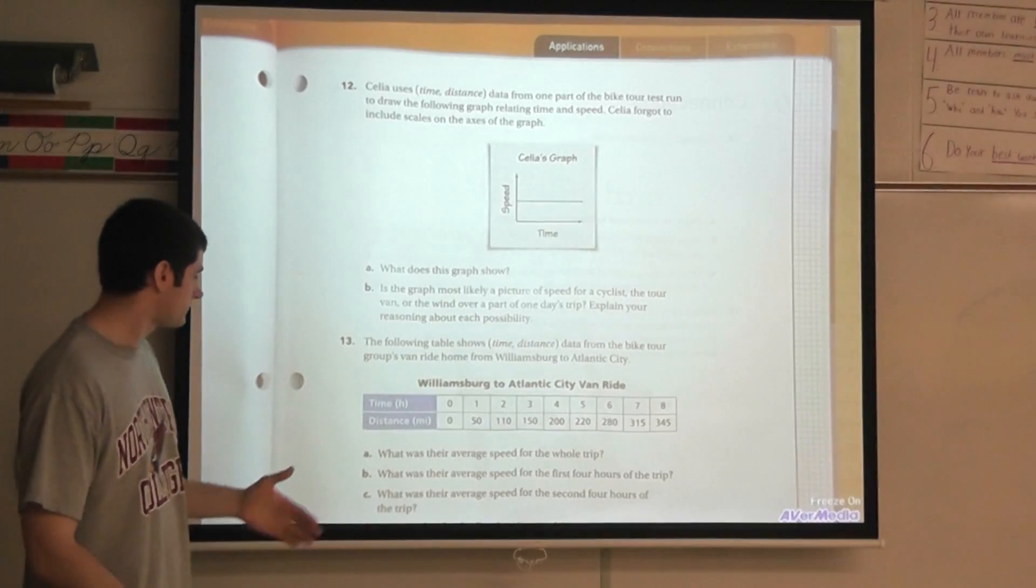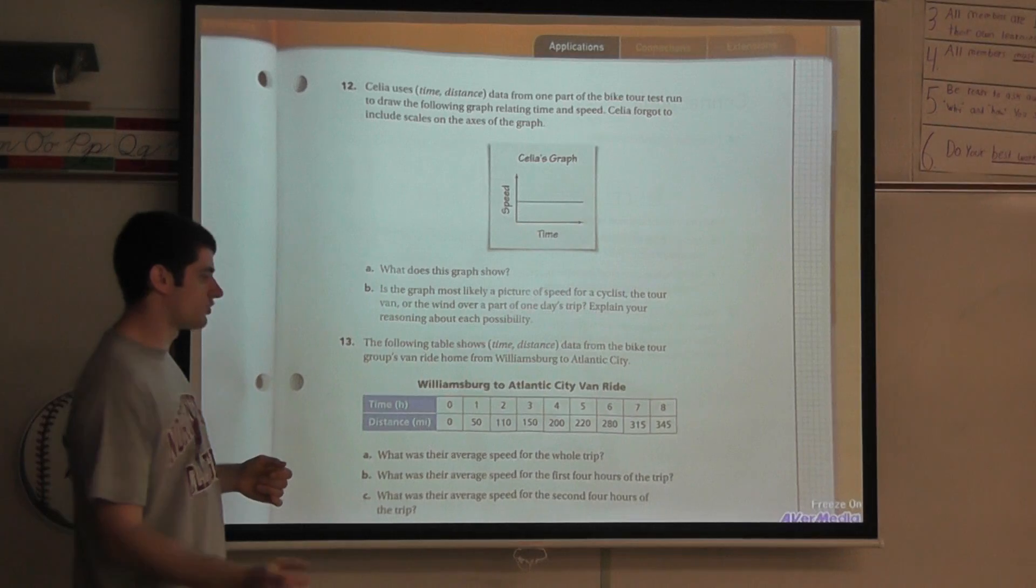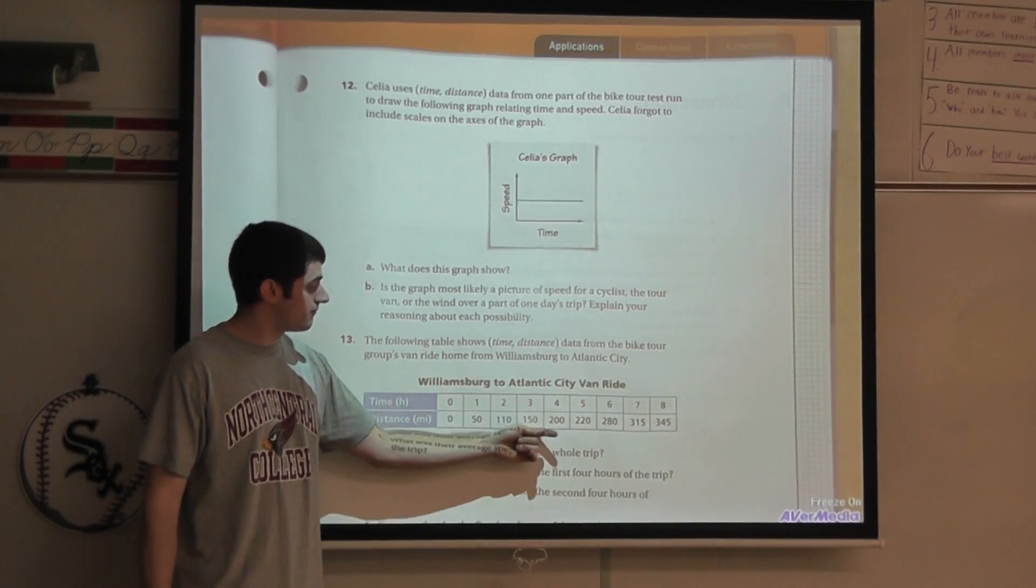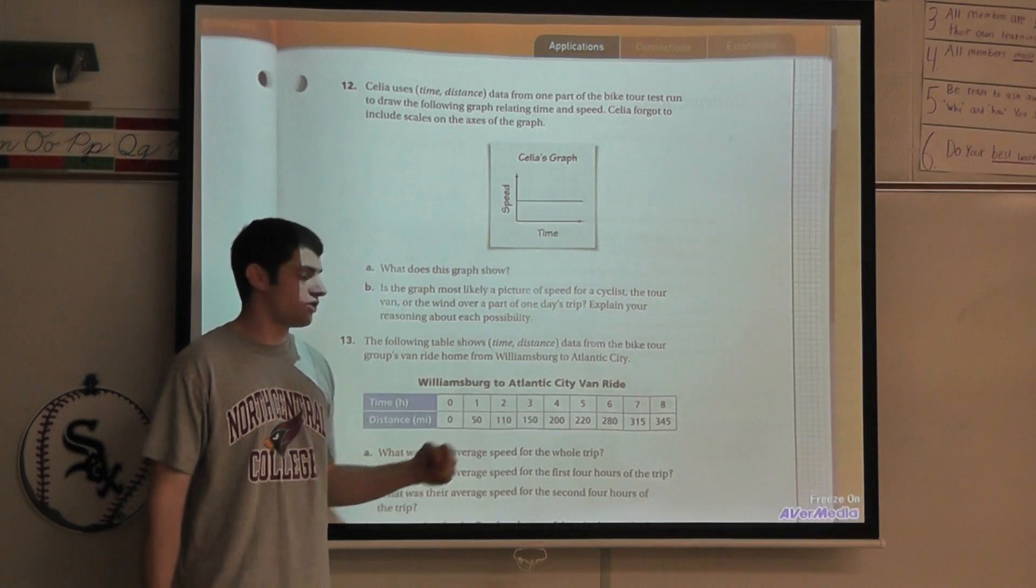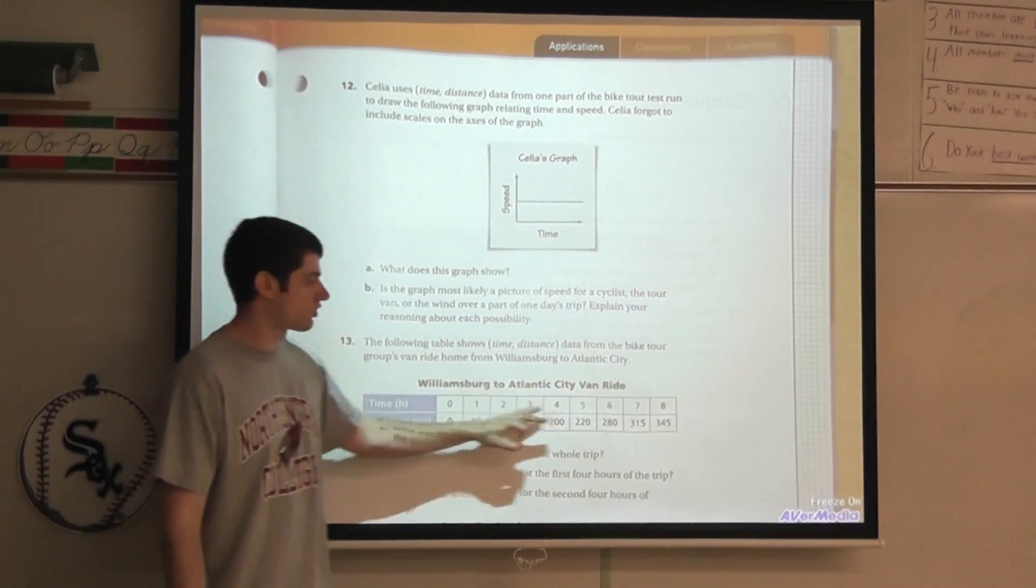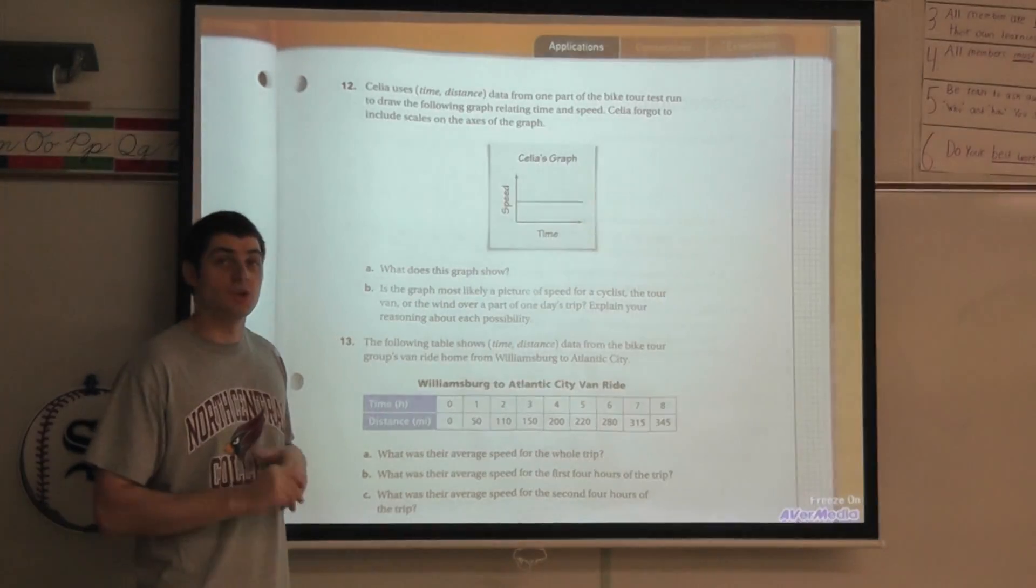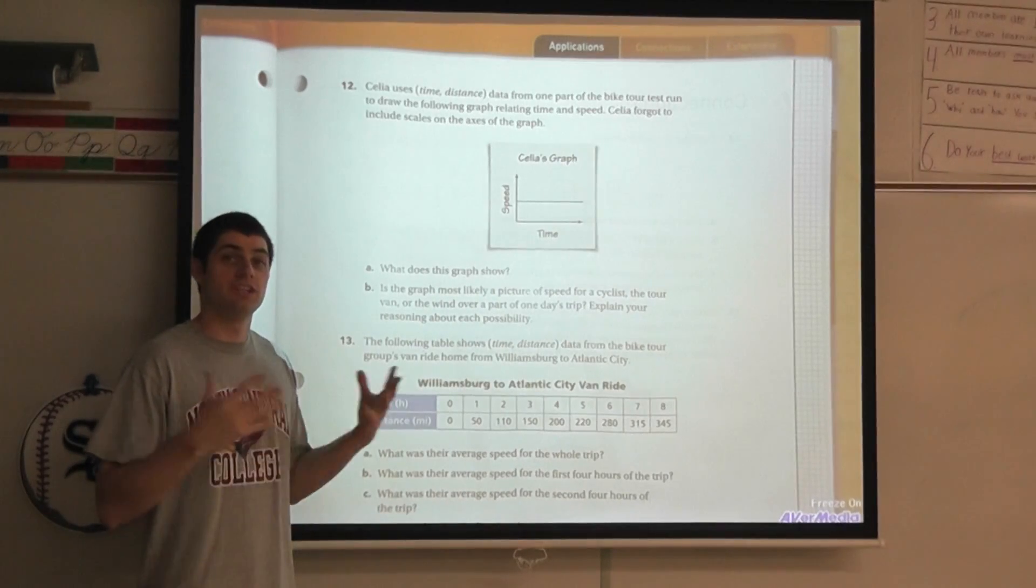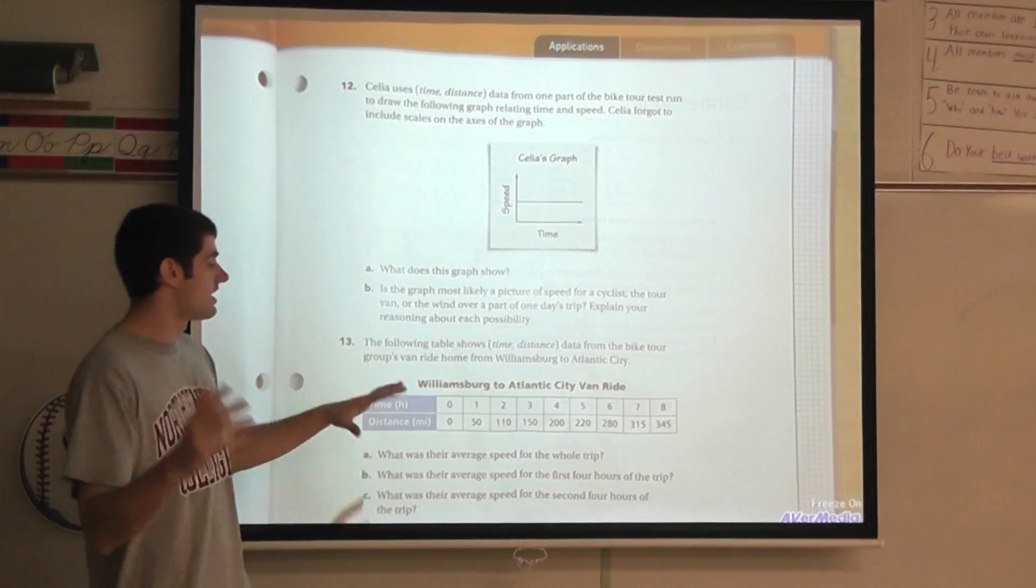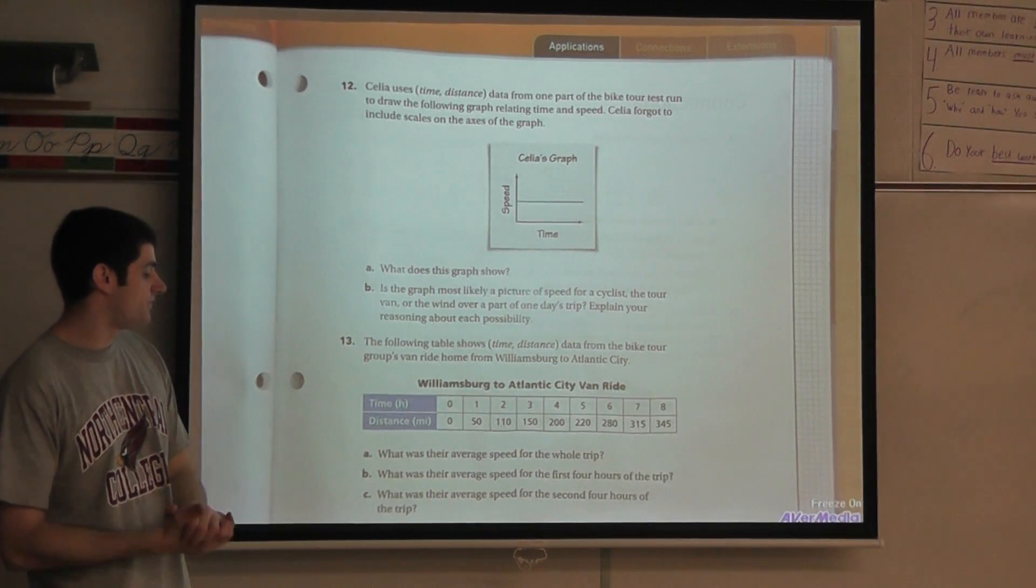Basically if I want to round it to make it easy for myself, about 43 miles per hour is my average speed. Part b, what was their average speed for the first four hours of the trip? Well let's just look at the first four hours. In the first four hours we went 200 miles, so I can take my distance 200 miles divided by four hours and it's going to be 50 miles per hour. So even though my average for the entire trip was 43, in this first four hours the average was 50 miles per hour. Now some of you might be saying well that's a little bit faster. Well let's think about that, why could that be faster?